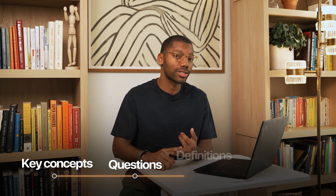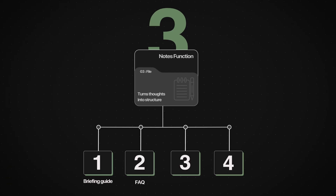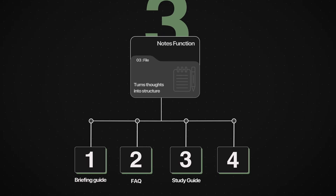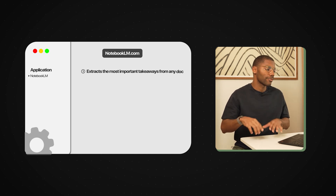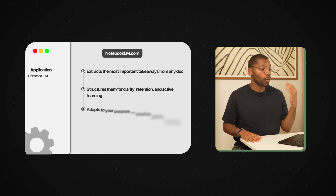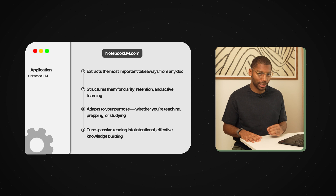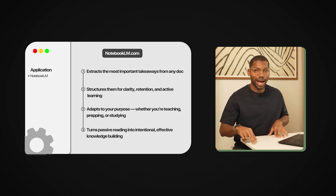Format three transforms all your information into a personalized learning system. It gives you key concepts, questions, definitions, and summaries, guiding you in a logical sequence through all the information — helping you understand the big picture and the small details. This format is the Study Guide. It extracts the most important takeaways from any document, structures them with clarity, retention, and active learning, adapts to your purpose whether you're teaching, prepping, or studying, and turns passive reading into intentional and effective knowledge building.